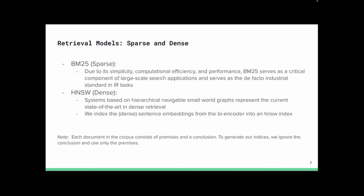For retrieval models: we are all familiar with sparse retrieval models like BM25, which remains the de facto industrial standard. We experiment with BM25 and HNSW — Hierarchical Navigable Small World graphs — for dense retrieval, which represents the current state-of-the-art in dense retrieval. The dense sentence embeddings from the bi-encoder are indexed into HNSW. One note: each document consists of premises and a conclusion, but we ignore the conclusion and only use the premises for indexing.